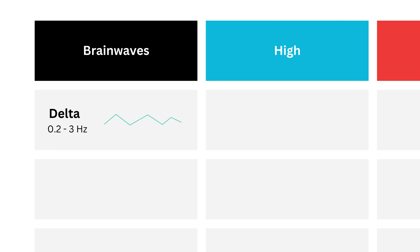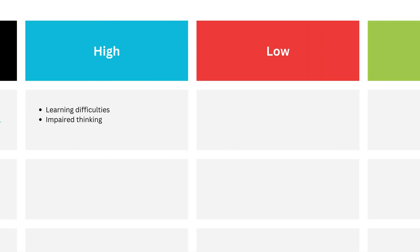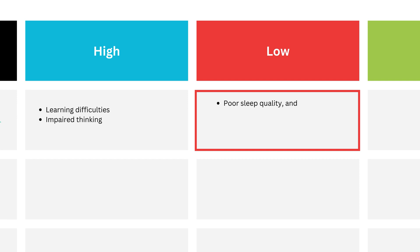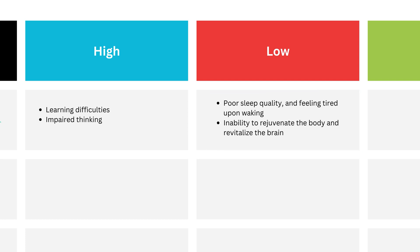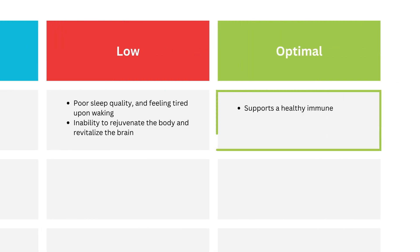The body takes advantage of this low activity to reset and prepare for the coming day. High levels of delta waves are associated with learning difficulties and inability to think, whereas low levels are associated with poor sleep, feeling tired after waking up, and inability to regenerate the body or revitalize the brain. The optimal level of delta waves is associated with a healthy immune system and more restful sleep, so you wake up refreshed.